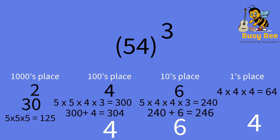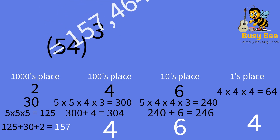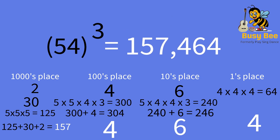Now, we multiply 5 times 5 times 5, which is 125. Now, we add 125 plus 30 plus 2, which is 157. The final answer is 157,464.